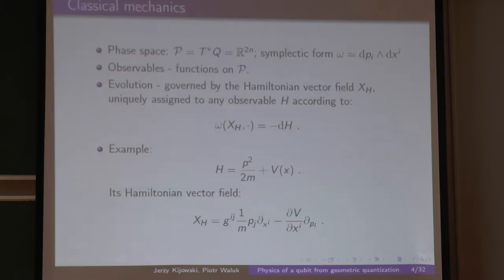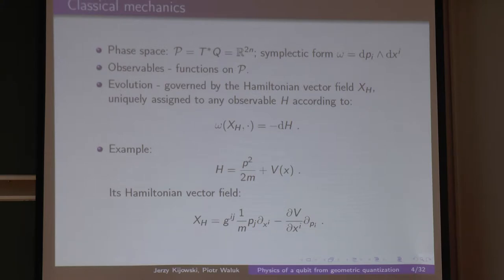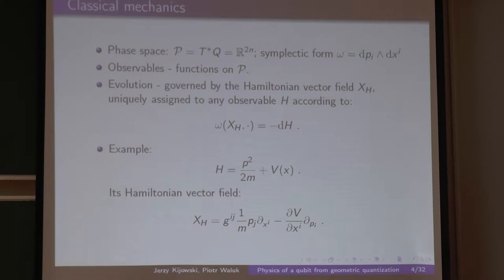So, basic notions of classical mechanics: the phase space is a cotangent bundle of some configuration space. A priori, no linear structure is assumed in Q. However, there is linear structure in all the fibers — because momenta at each point carry linear structure, but you cannot add momenta attached at different points. This space is endowed with a symplectic form, and observables are functions of positions and momenta.